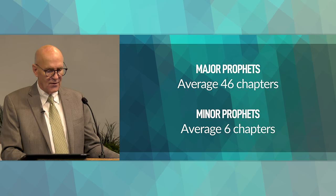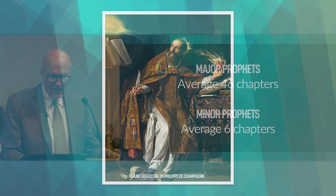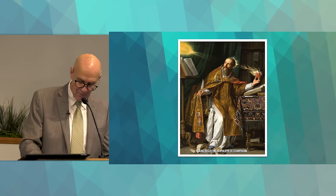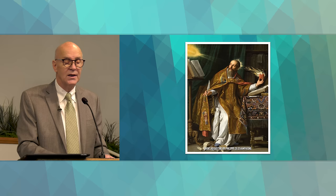A little known fact: the name Minor Prophets was coined by Augustine, the Catholic theologian and monk, who referred to the longer books as major and shorter books as Minor Prophets. Augustine lived 354 to 430 AD.